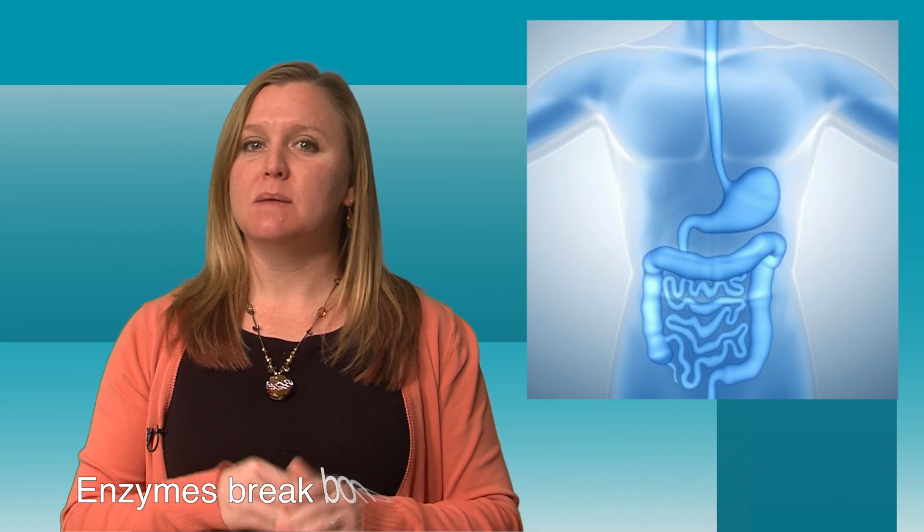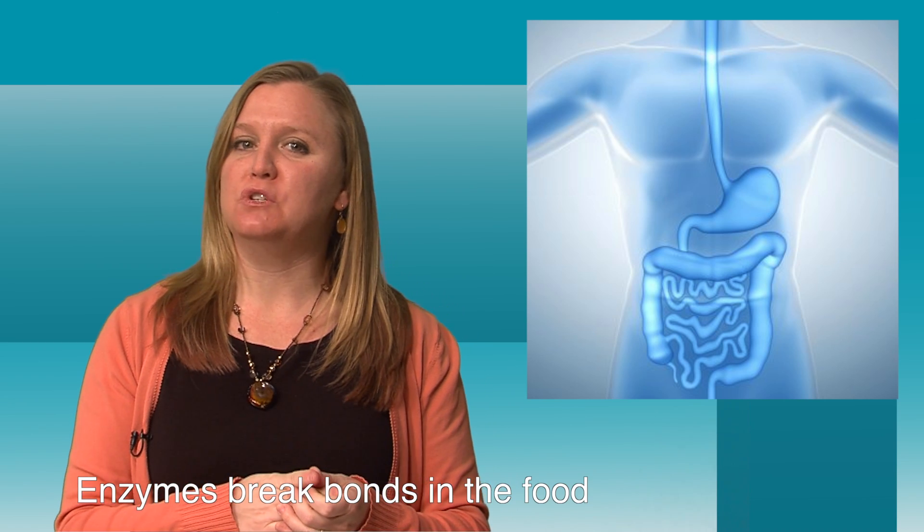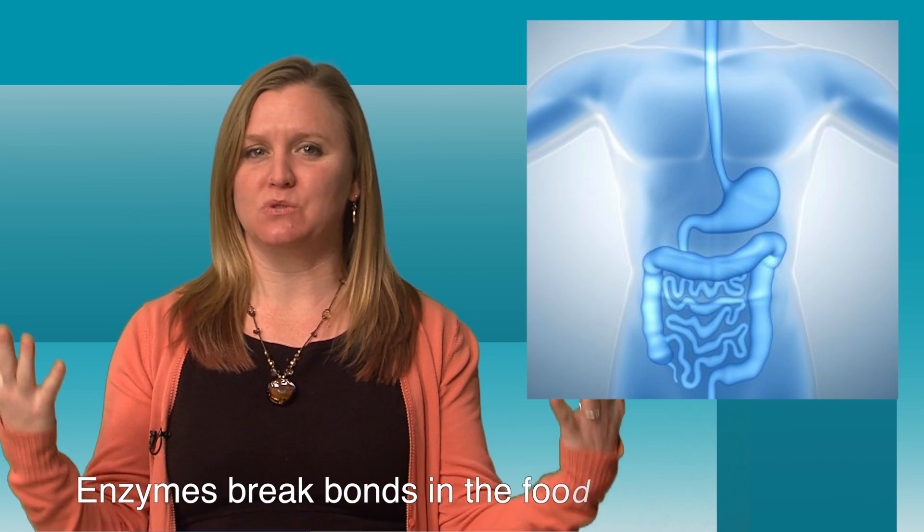We can alter the food mechanically through chewing, churning, mixing, segmentation, and peristalsis. We can alter the food chemically using enzymes. Enzymes break bonds in the food and allow for the food to become a form that is easily absorbed.